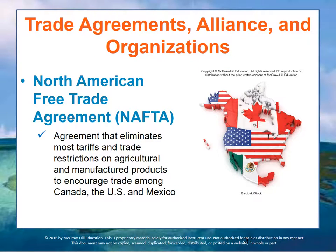The North America Free Trade Agreement, or NAFTA, is an agreement that eliminates most tariffs and trade restrictions on agricultural and manufactured products to encourage trade among Canada, the United States, and Mexico. NAFTA effectively merged Canada and Mexico into one market of more than 470 million consumers and virtually eliminated all tariffs on goods produced and traded, creating a free trade area. The estimated annual output from this trade alliance is about $17 trillion.